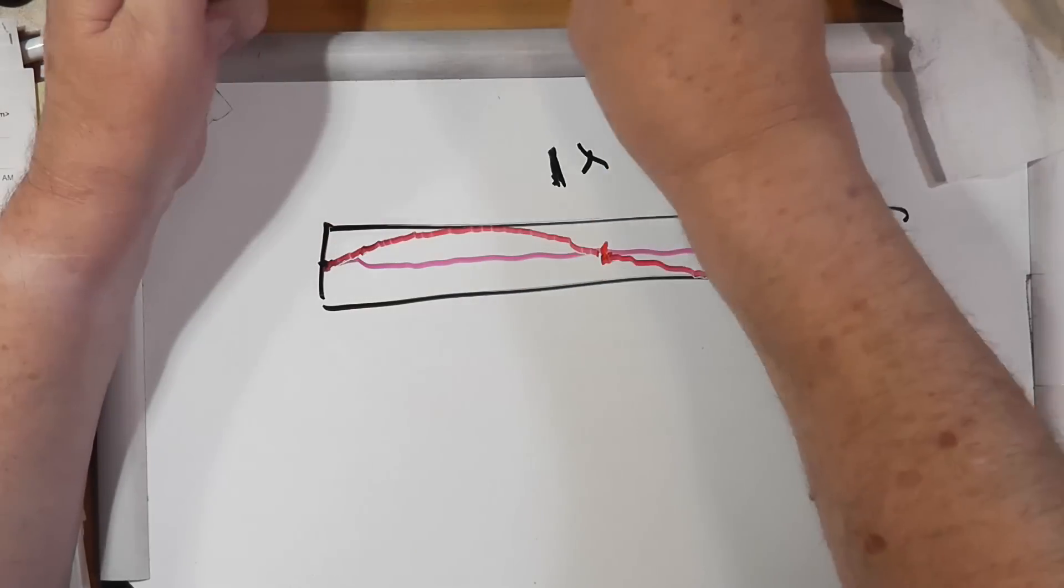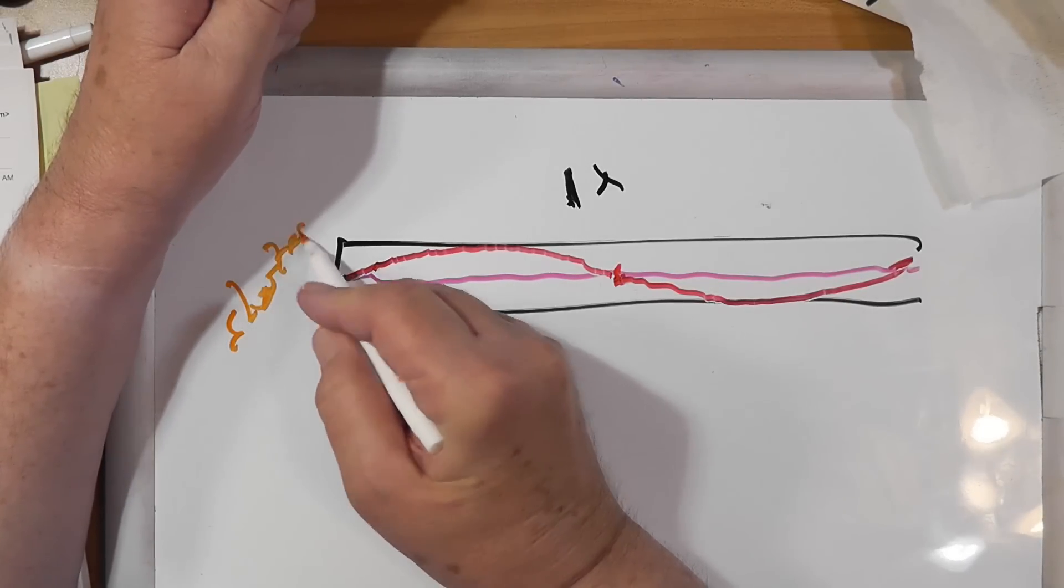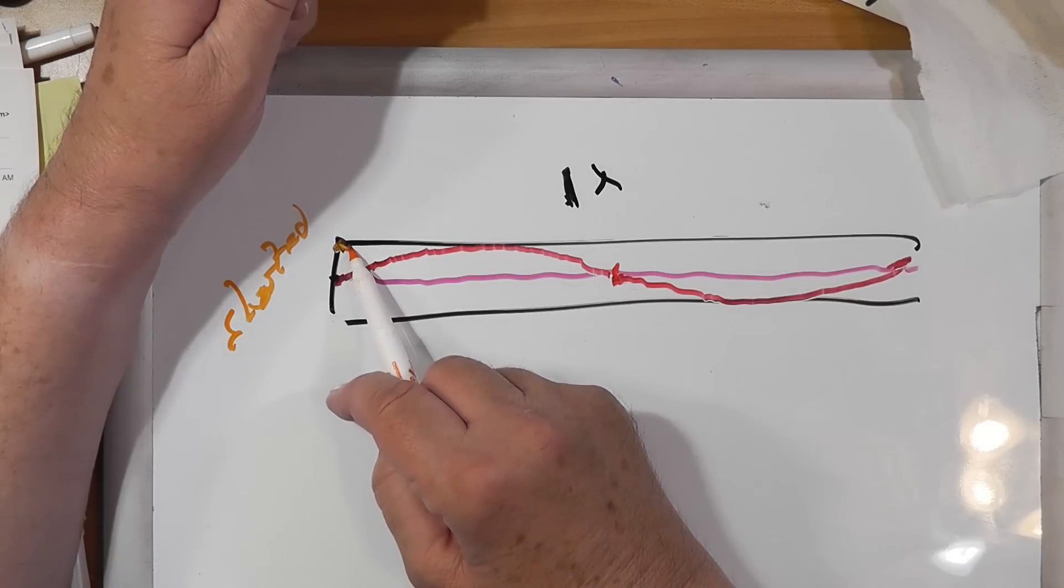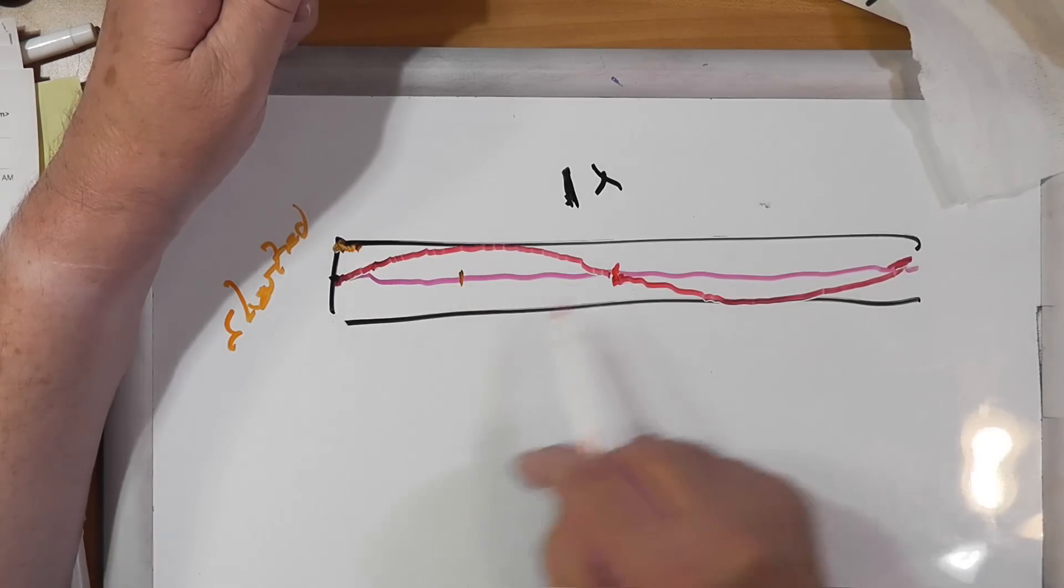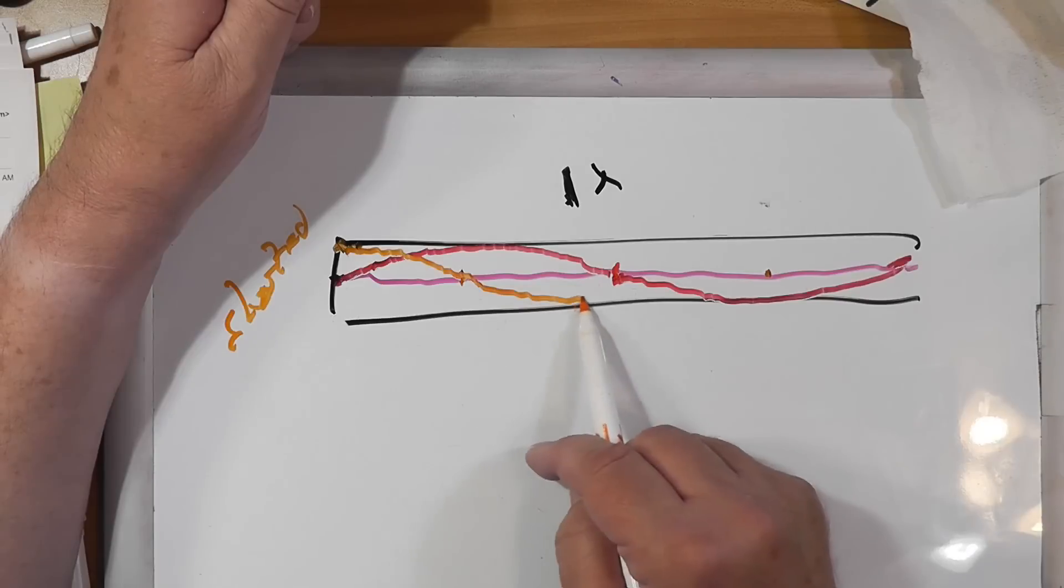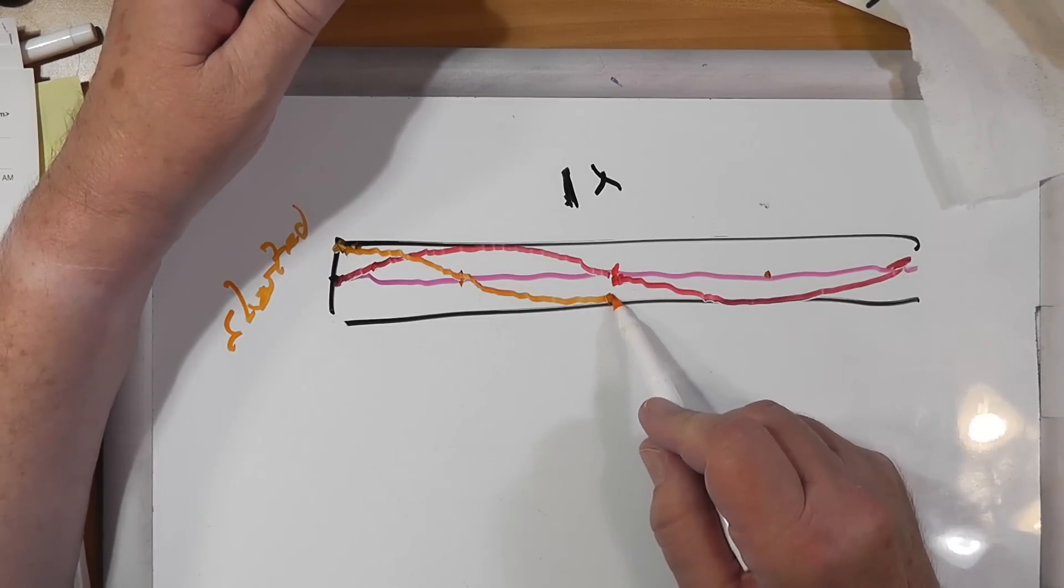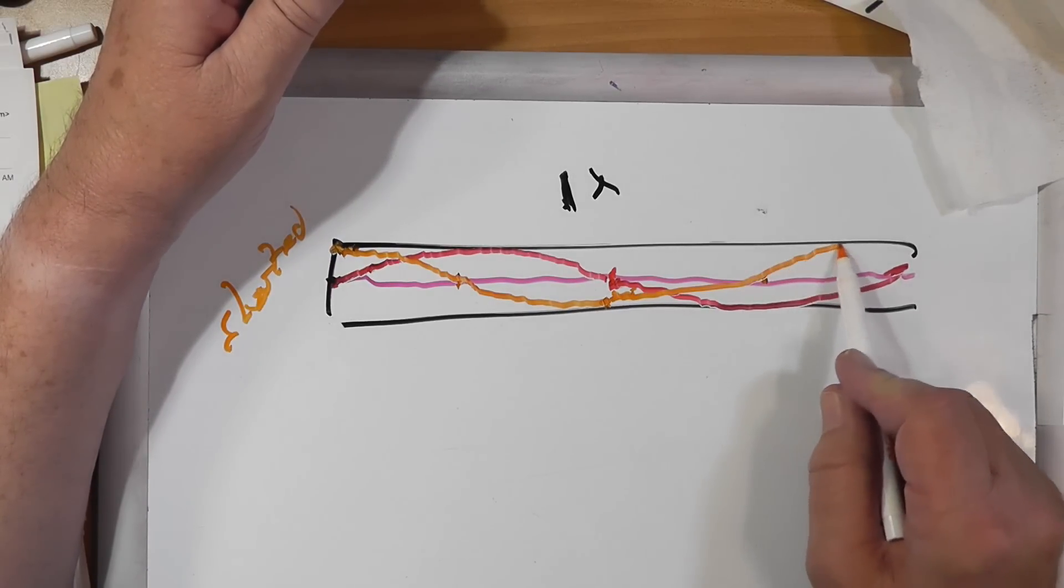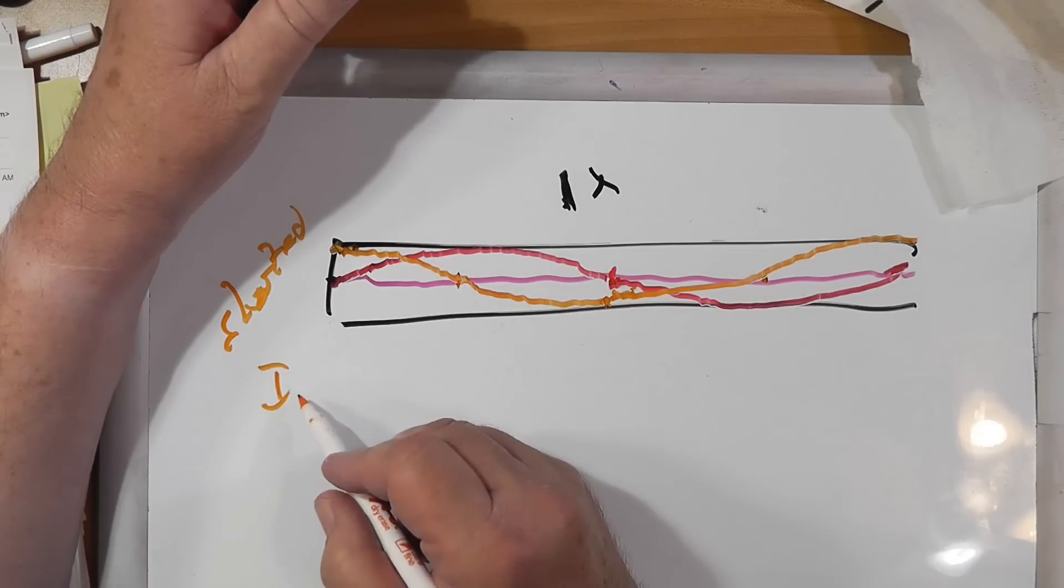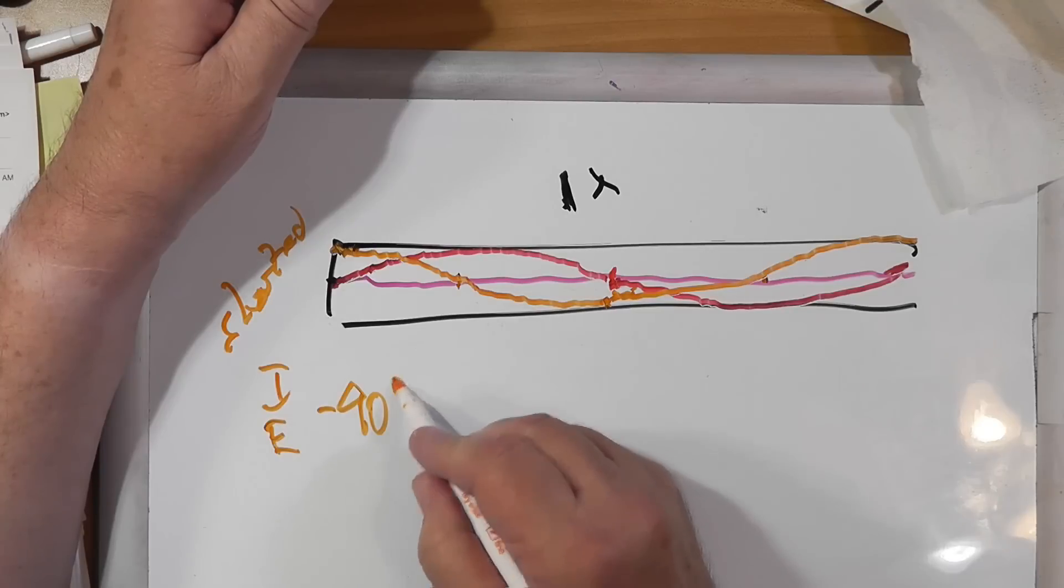Now, this is shorted here. So the current is maximum here, it's going to come down like this. It's maximum here, zero there, minimum here, and it's going to come back up through here, and go up to a maximum. So the current and the voltage are 90 degrees out of phase.